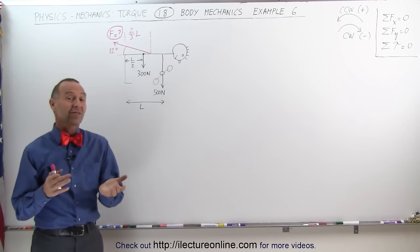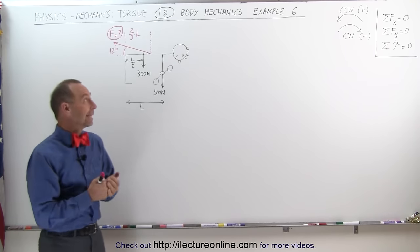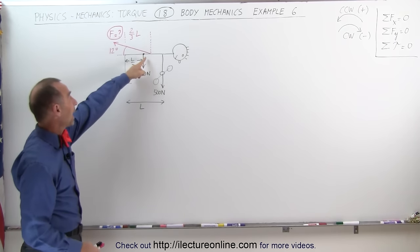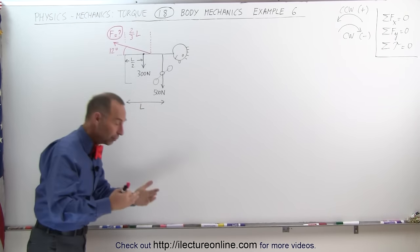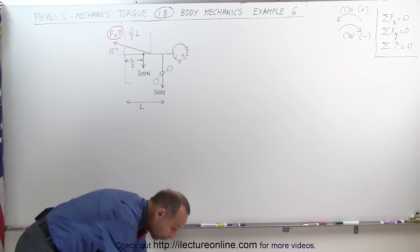Welcome to Electron Online. Here's our next example of body mechanics. In this case we're talking about the muscles in the back that allow us to bend over and potentially hold weights like this.